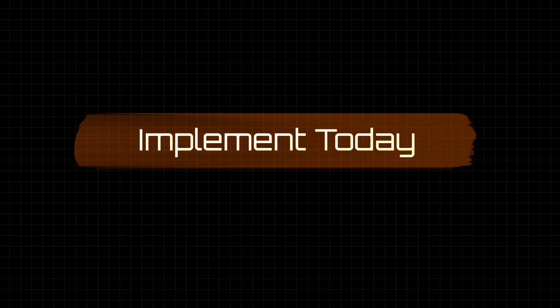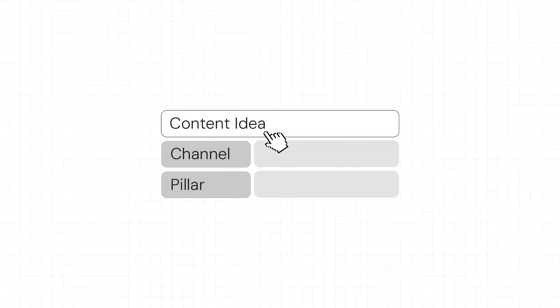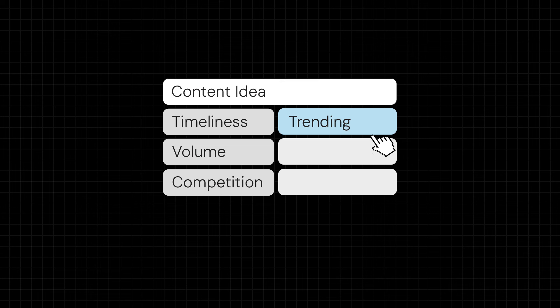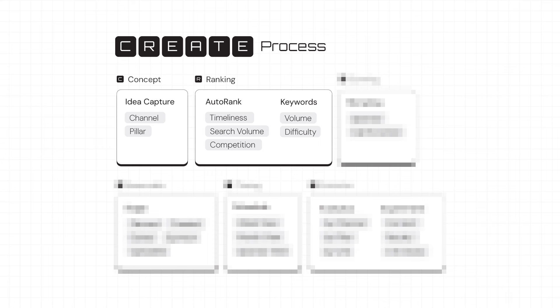It's built around my CREATE process, which is the exact framework I've used to grow my audience. Concept: we want to capture ideas quickly and sort them by their channel and content pillar. Ranking: we score the idea based on timeliness, search volume, competition, keyword volume, and keyword difficulty. The auto rank and keyword score features will then automatically organize these so we know which content ideas to prioritize.